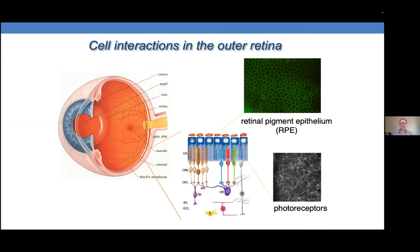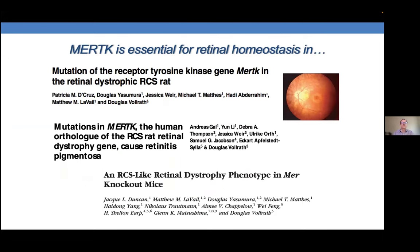A long time ago we probed the mechanism of RPE phagocytosis of outer segments by identifying the gene responsible for the phagocytic defect in the RCS rat. We then went on to identify mutations in MERTK in humans with retinitis pigmentosa and defined the RP38 locus, then studied knockout mice generated by Glen Matsushima and found a very similar phenotype to the RCS rat. This work showed that MERTK is essential for retinal homeostasis in three mammals.